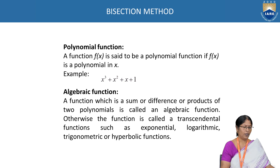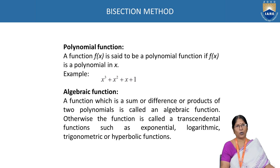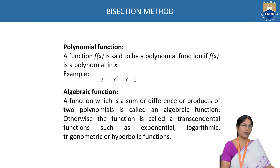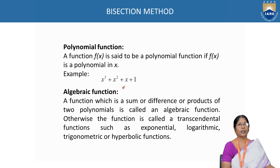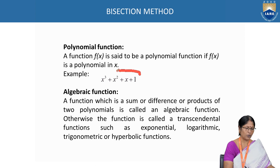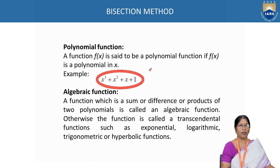Polynomial function. A function f of x is said to be a polynomial function if f of x is polynomial in x. Example: x³ + x² + x + 1 = 0. It is a cubic polynomial.